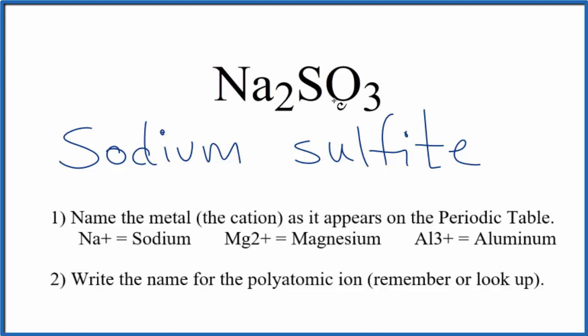Sulfite is one of those ones that either you're allowed to look it up on a table of common ions or you memorize that SO3 is the sulfite ion. When it's bonded to a metal, SO3 will be sulfite.